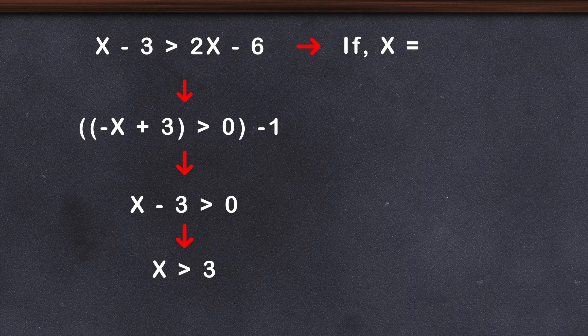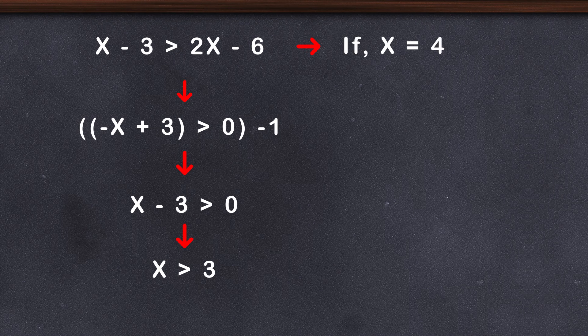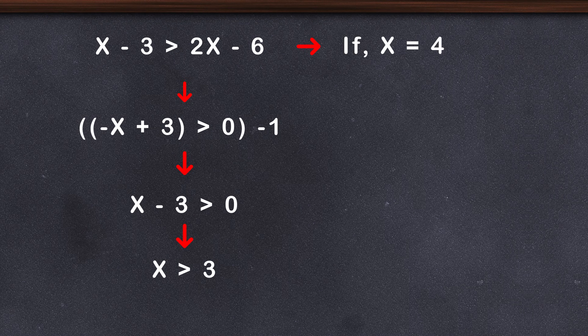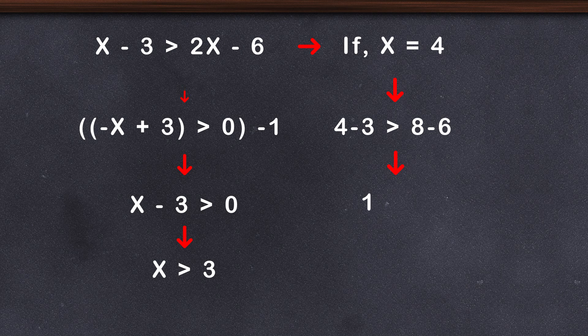If we plug in x = 4 in the original inequality, does it satisfy the inequality? x = 4 would give us 1 > 2, which is clearly not true. 4 - 3 > 8 - 6, or 1 > 2. This happened because we multiplied the inequality by a negative number. You need to remember this about inequalities: when you multiply or divide the equation with a negative number, the inequality flips.